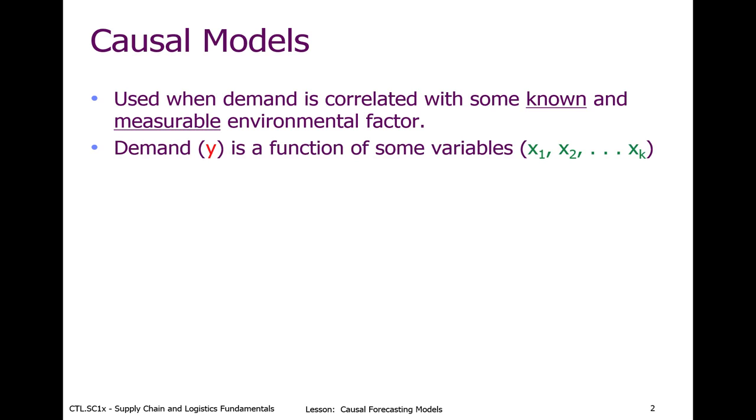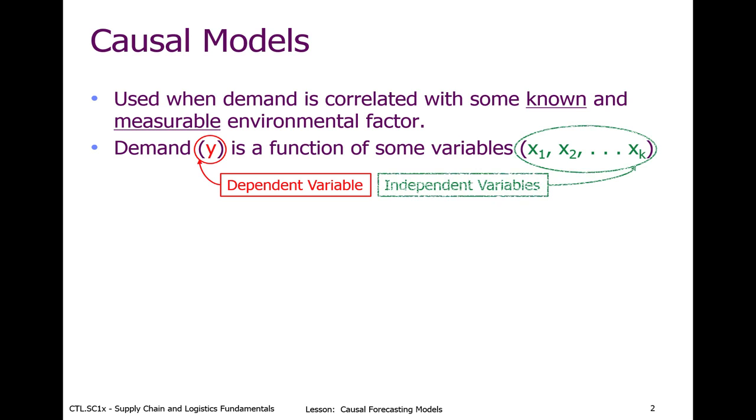We typically say that demand, and we always use this as y, is a function of some variables x1, x2, up to xk, where we have k explanatory variables. We say that y is a dependent variable because this demand, or y, is a function and depends upon these independent variables. These are those environmental factors. They're independent in that they should be independent from each other. They shouldn't have any relationship to each other. But individually, they will contribute somehow to understanding the correlation of demand.